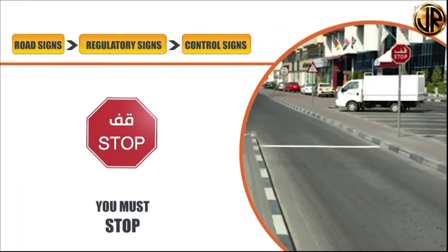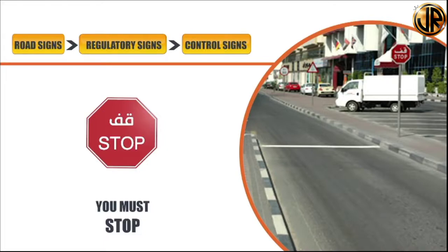Stop sign. This sign means motorists must stop. It is the only sign in the signing system which has the unique octagonal shape to differentiate from other signs because of its importance. This sign is usually found in areas where the driver's view might be obstructed or where there is an actual or hidden hazard, such as at T junctions, service roads, slip lanes, side roads, U-turns and exit points. This sign instructs that drivers must stop before the stop line even if there is no traffic, scan the road and then proceed safely.